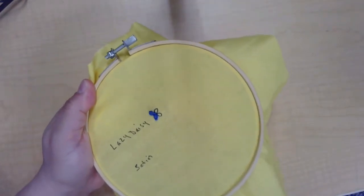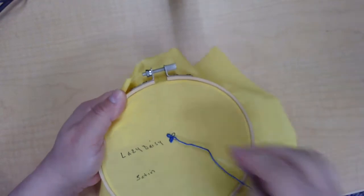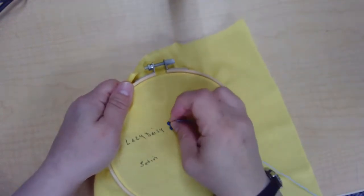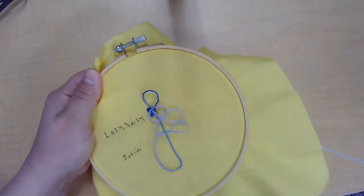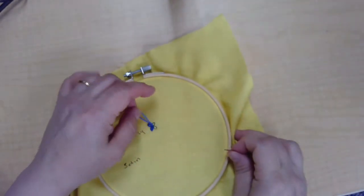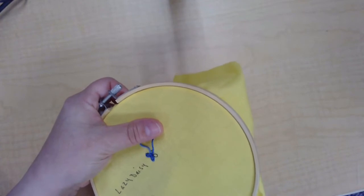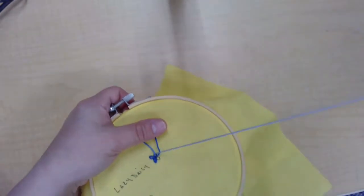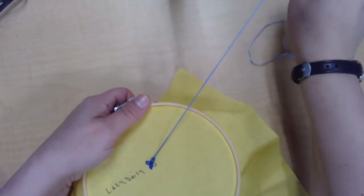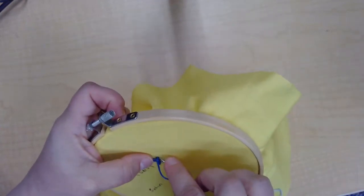Up through the middle, back down next to it. Straighten out your loop. You don't want it twisted. Up at the top of your petal, pull slowly. Go back down over your floss near where you came out to anchor it in place.